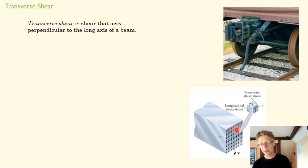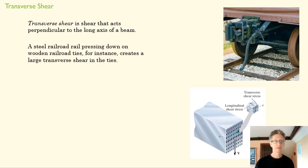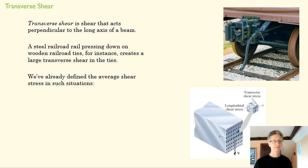So if our beam is like this, it's acting across that length. And we can see an example of that with a railroad tie here. This steel rail, which has a great weight placed upon it, is pushing down on this railroad tie. The beam is horizontal. The force is vertical.